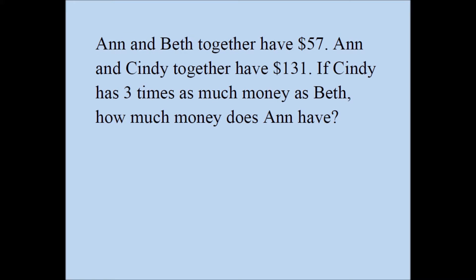We need to understand a couple of things here. We know the total amount of Ann and Beth's money, and we know the total amount of Ann and Cindy's money. So Ann belongs to both sums — Ann's amount is in both, and they have to be the same number. We also know Cindy's amount is three times as large as Beth's amount. So Ann belongs to both sums, and Cindy is three times as much as Beth.